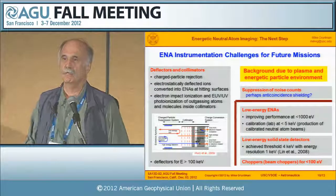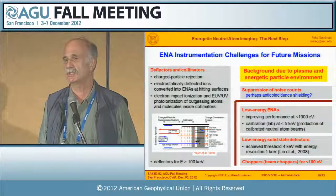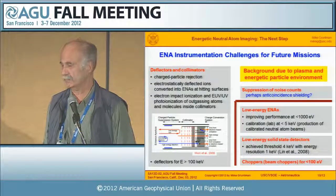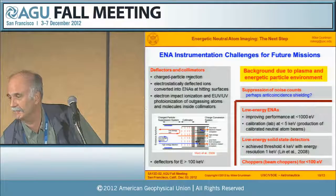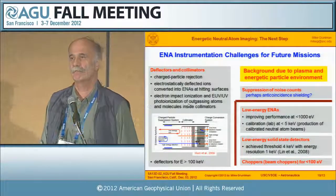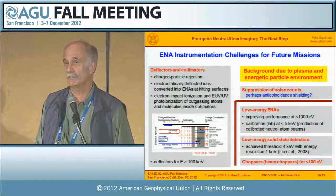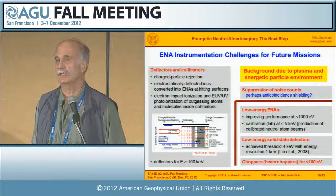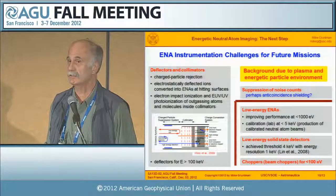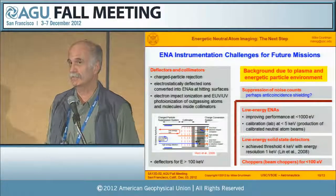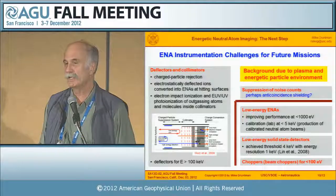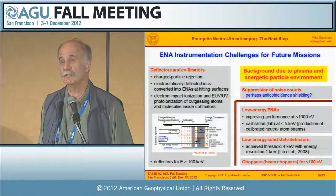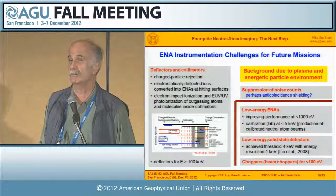Another major topic is suppression of background due to plasma and energetic particle environments. Because fluxes are so small, it is essential to eliminate any and all possible sources of noise. Collimators and deflectors used to remove ions are very complex. Extreme ultraviolet coming from all directions in space, and some energetic electrons that may leak inside the collimator, can ionize outgassing atoms and molecules inside the collimator, creating ions indistinguishable from energetic neutral atoms. Developing dedicated deflectors for ENA instruments with energies above 100 kiloelectron volts, and potentially megaelectron volts, is a major challenge, and it is not yet clear how to proceed in that direction.